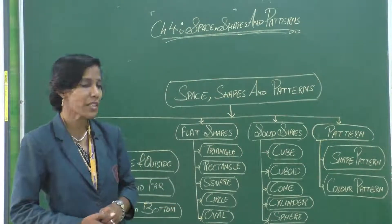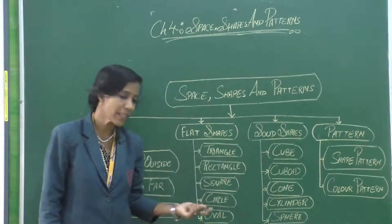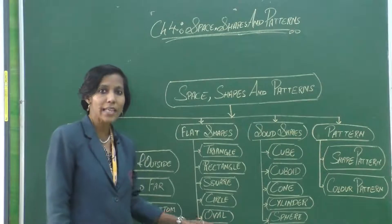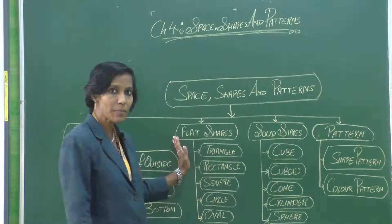Triangle, rectangle, square, circle and oval. We saw different kinds of flat shapes.